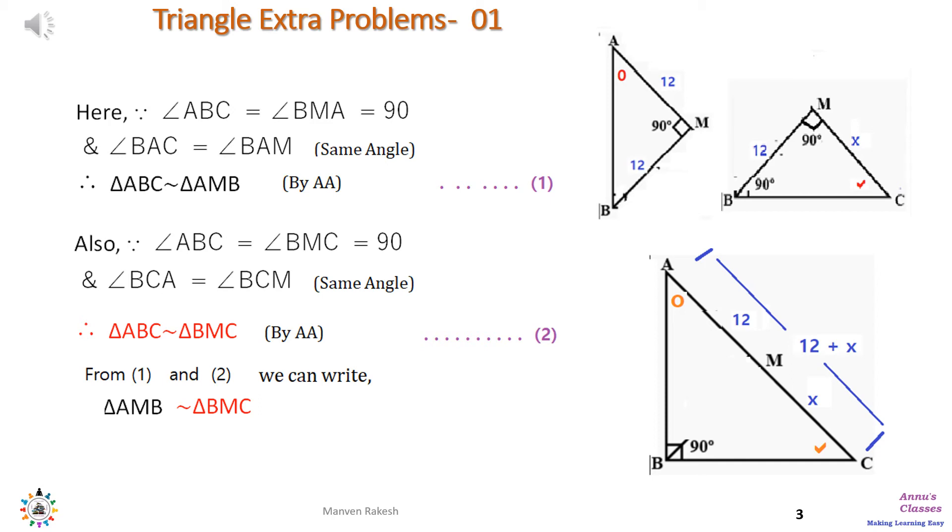Now we compare ABC with BMC. Here angle BMC and angle ABC are right angles, so they are equal. Angle BCA and angle BCM marked with the right sign are also equal because they are the same angle. So triangle ABC is also similar to triangle BMC.